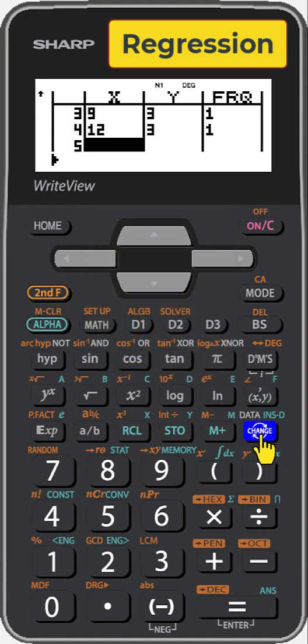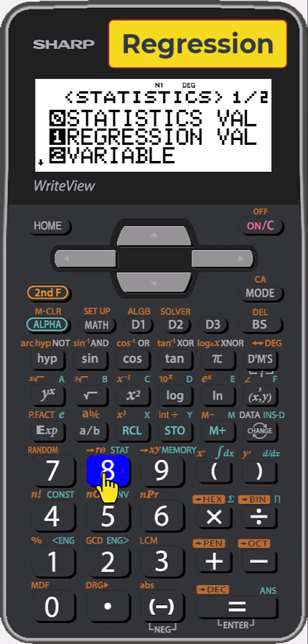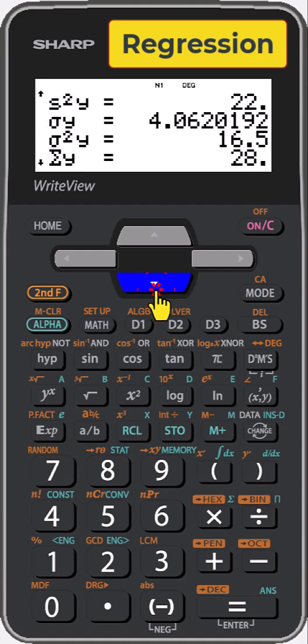Press CHANGE, then ALPHA8 for stats. To view the statistic values, press 0, then scroll down to see more XY statistics.